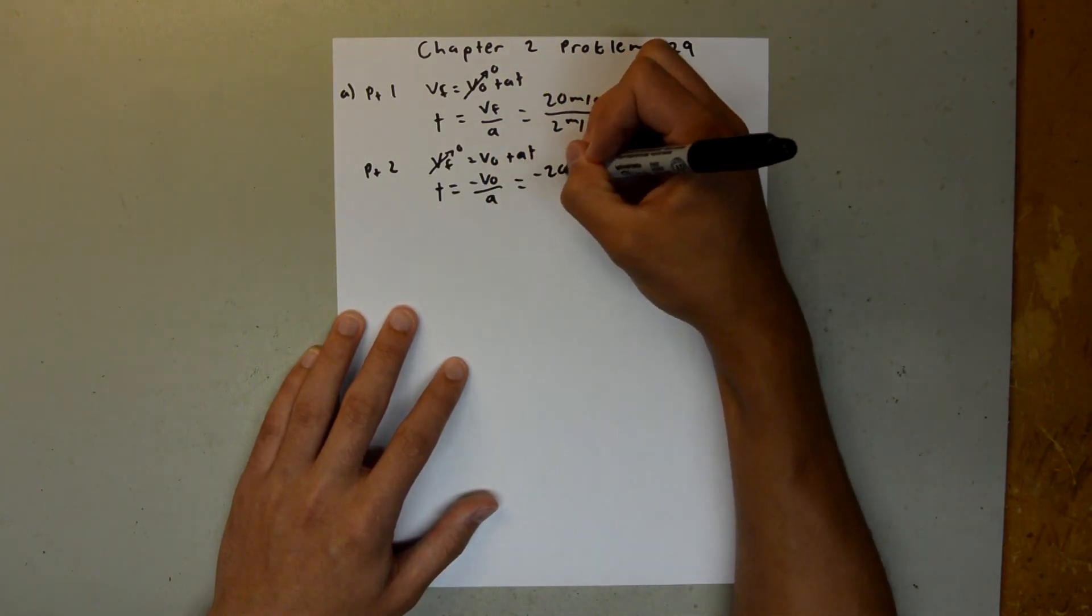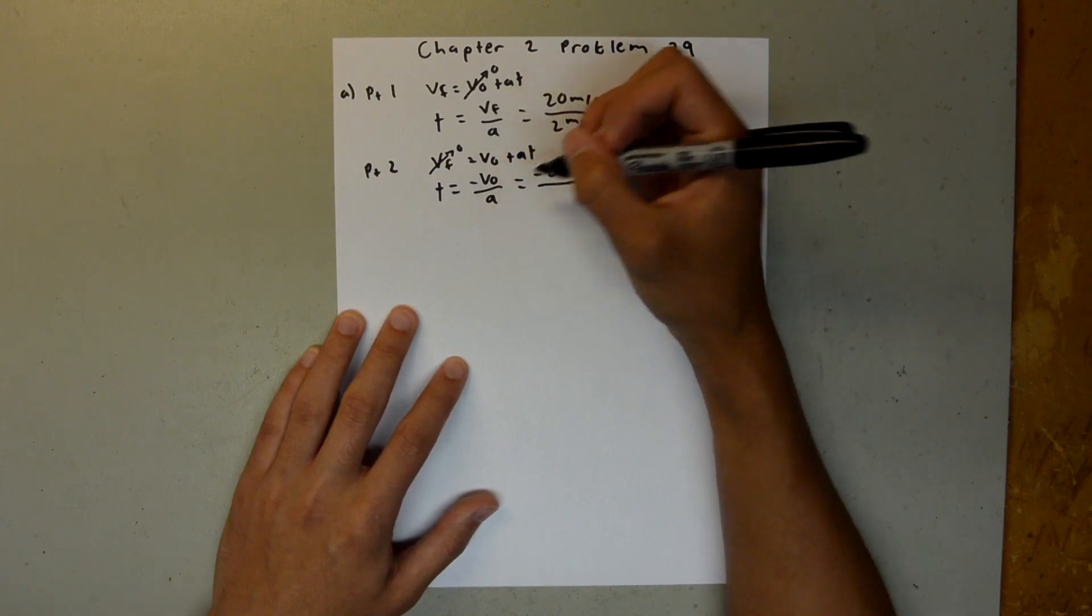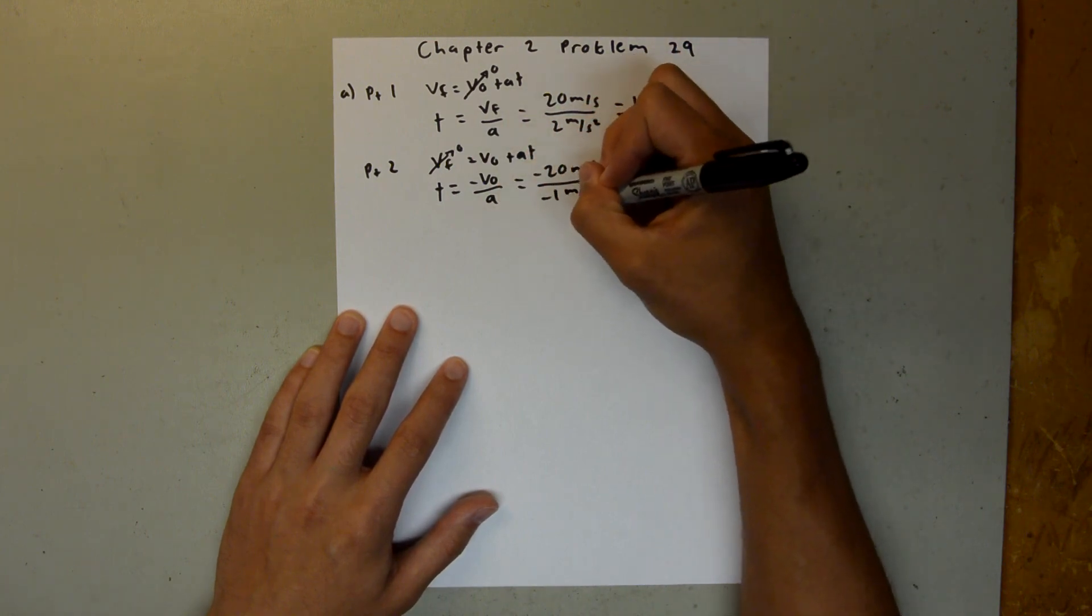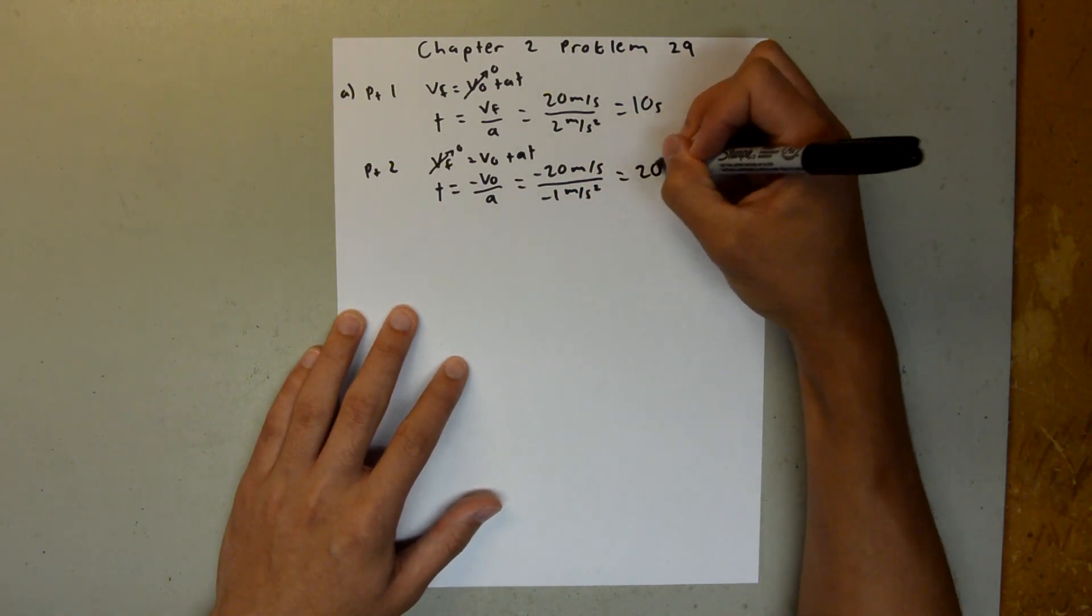This is equal to negative 20 meters per second, and our acceleration is negative 1 meter per second squared because we are decelerating. And when you plug that into your calculator, you should get 20 seconds.